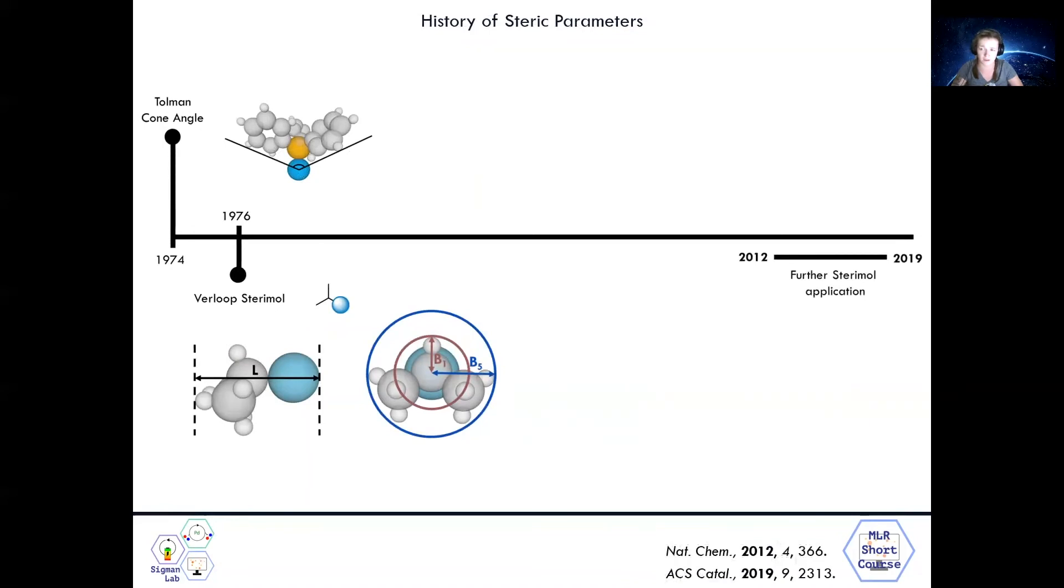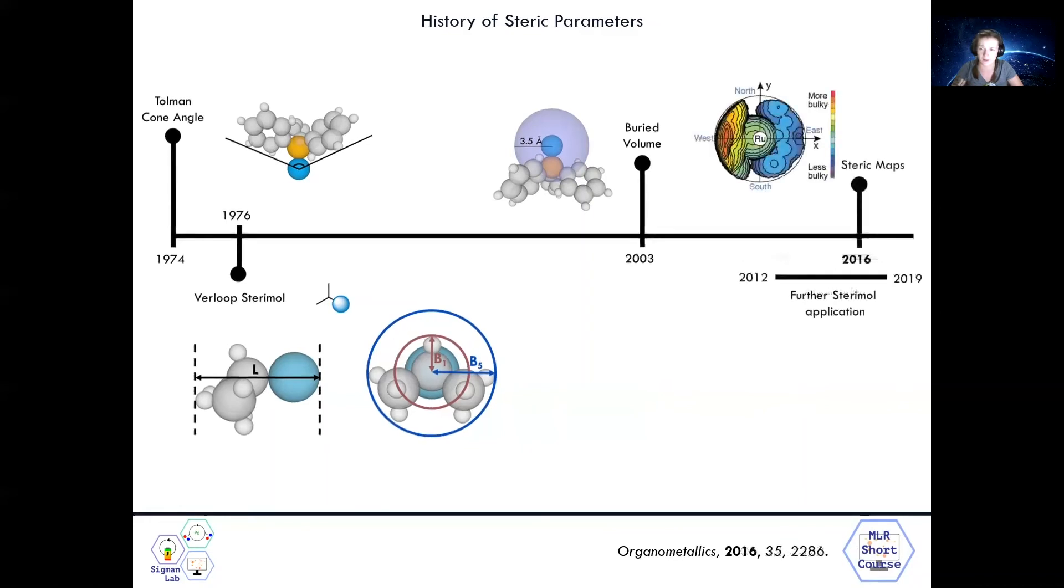And starting in 2012, the Sigmund group placed effort toward further applying these parameters to ligands. Cavallo and Nolan introduced buried volume in 2003, which, in the case of phosphine ligands, measures the amount of ligand located within a 3.5 angstrom sphere centered at the metal bound to the phosphine. This can, of course, be applied to an extremely wide range of situations beyond phosphine ligands. And in 2016, Cavallo created a program to make topographic-like steric maps as a way to give a picture of where steric bulk is located.